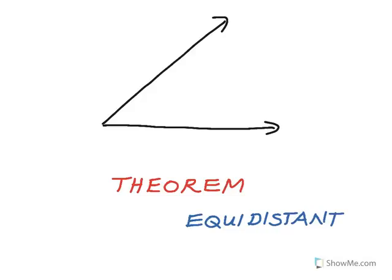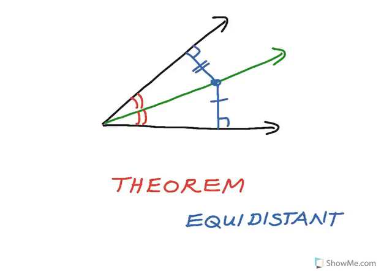Another theorem involving equidistance is about angle bisectors. If I draw a green angle bisector through the middle of this angle, it divides the angle into two congruent smaller adjacent angles. If I pick a point anywhere on this angle bisector, it is exactly the same distance from both sides of the angle. Dropping a perpendicular from that point to each side — the shortest distance from a point to a line — those distances are equal, and that goes for any point on the angle bisector.